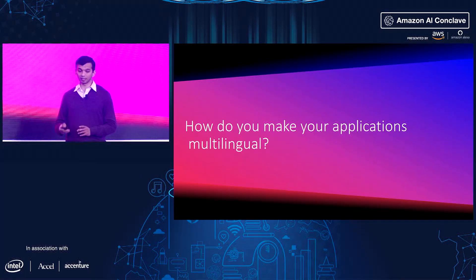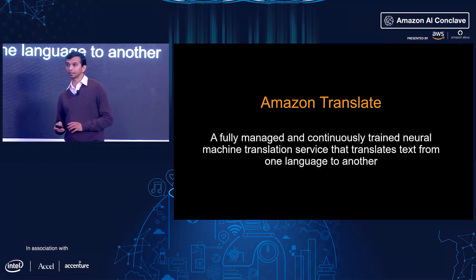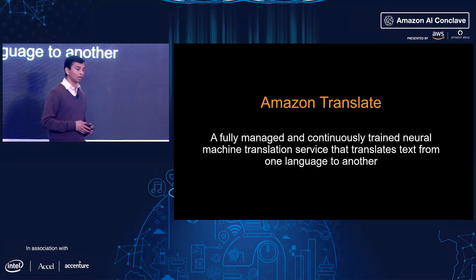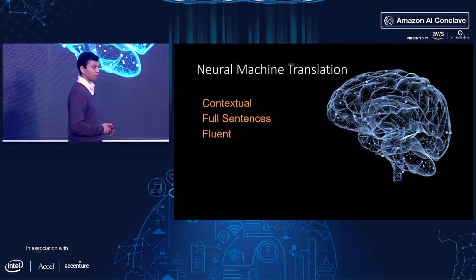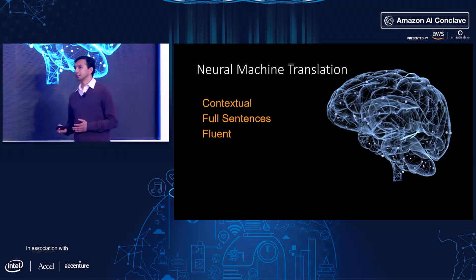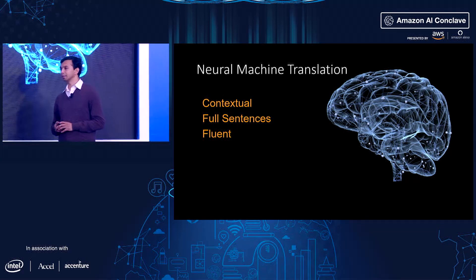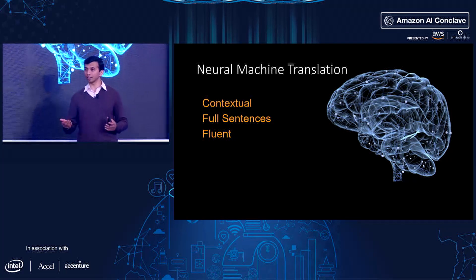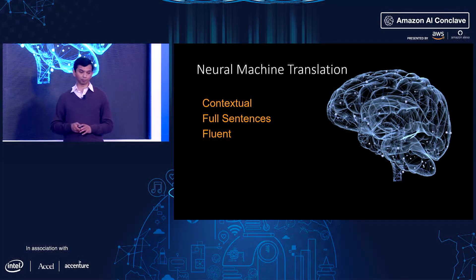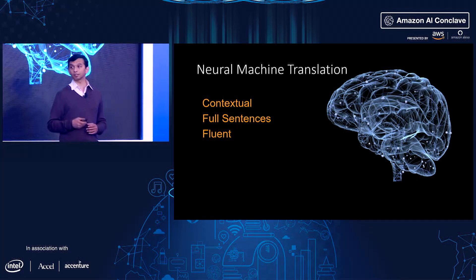Moving into translation — Amazon Translate is a fully managed, continuously trained service that translates text from one language to another. We used neural machine translation, which is important because older phrase-based translation doesn't take context into account, going phrase by phrase, which isn't natural. With neural machine translation, it's done contextually, handles full sentences, and the output is quite fluent.